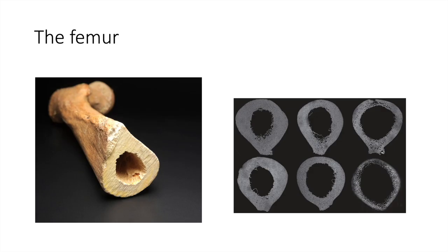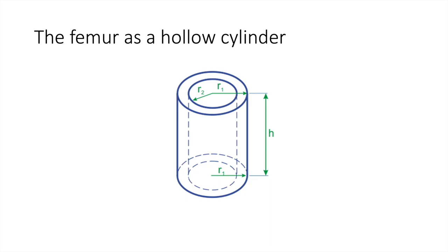A femur looks like this — it's like a hollow tube. So it makes sense to assume for a moment that the femur will behave as a hollow cylinder, a hollow cylinder with an inner radius, outer radius, and height. Once we assume this, it also makes sense to start talking about the properties of a cylinder.